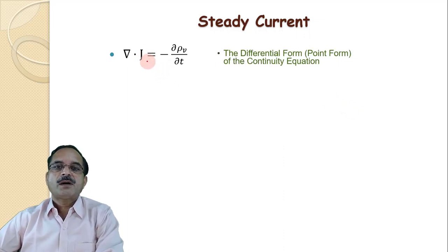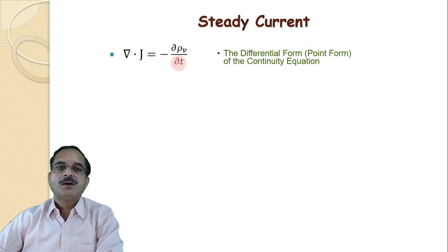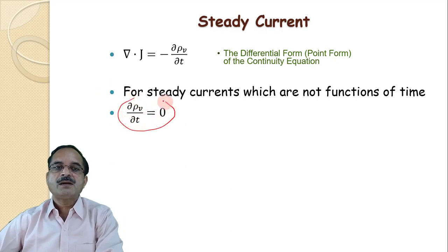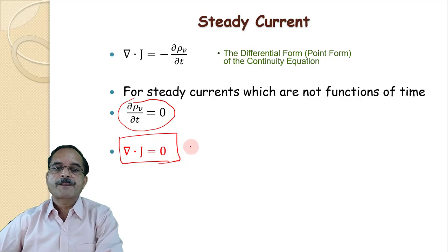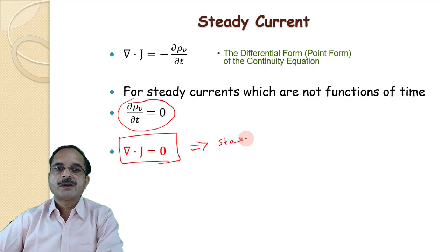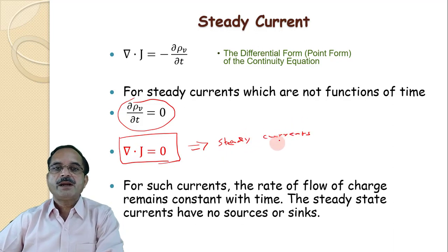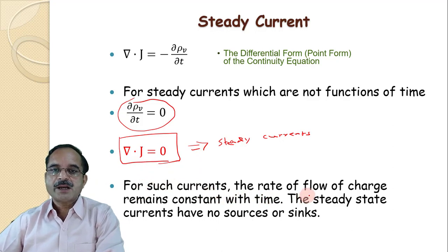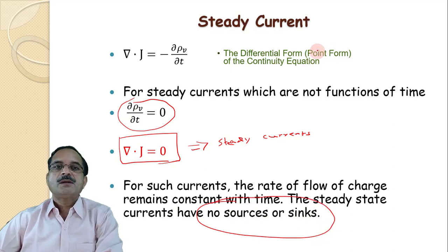This is the differential form of the continuity equation: del dot J equals minus d/dt of rho V. In the case of steady state — steady current, that is, DC or direct current — the rate of change of charge is zero. So for steady currents, divergence of J equals zero. For steady state currents, the rate of flow of charge remains constant with time, and steady state currents have no sources or sinks. This covers the continuity equation in integral form, point form, and differential form for steady state current.